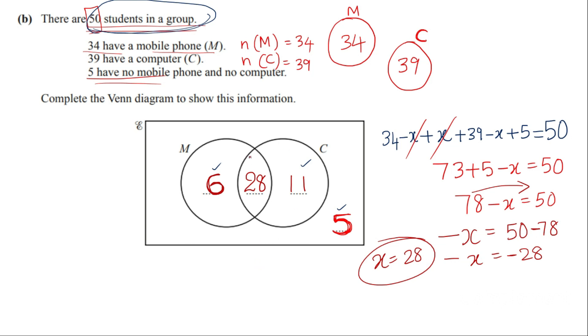And just to check your answer you can always check 6 plus 28, yes it's 34. And the number of computers 28 plus 11, 39. So that's how you complete this answer.